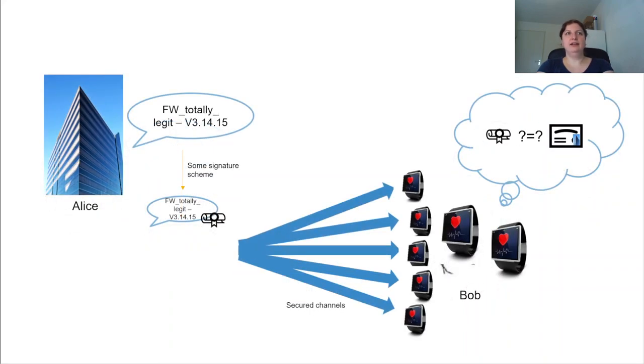In reality, it can be a bit more complicated. For instance, Alice can be a large company who wants to send a new firmware image to all their devices. To make sure these devices can verify that the firmware image actually came from company Alice,